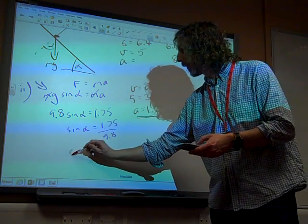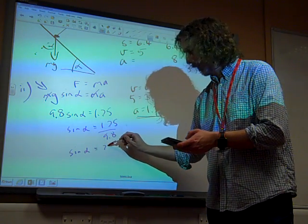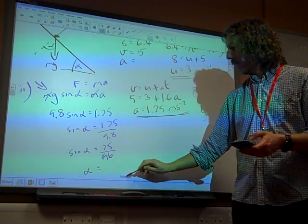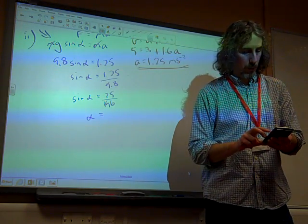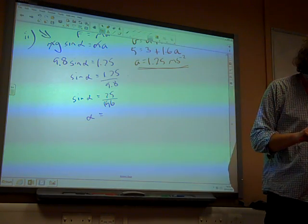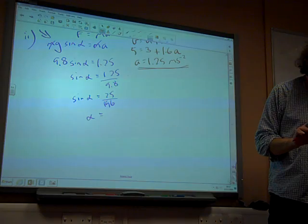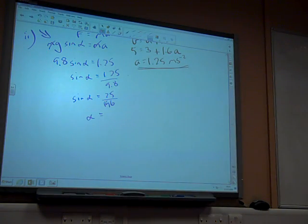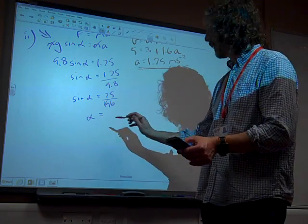And that is 25 over 196. And if we do inverse sine of 25 over 196... You're in radians, I'm just going to change it. That gives us 7.33 degrees.